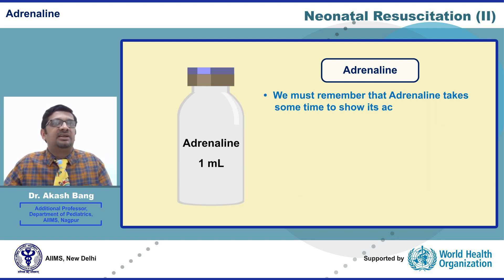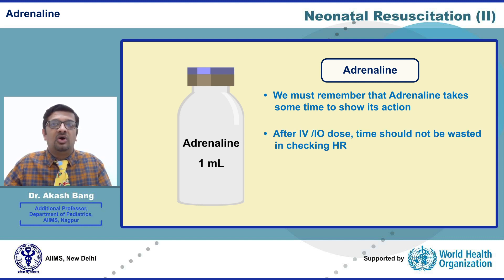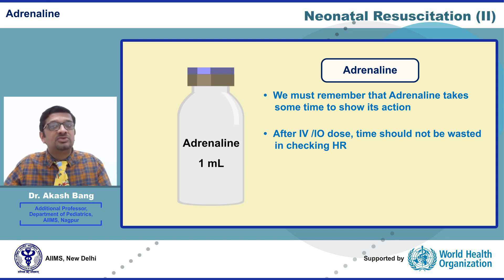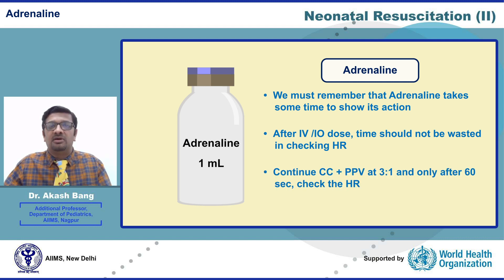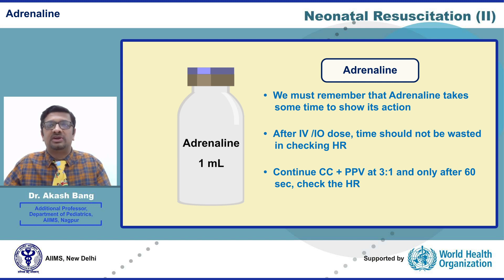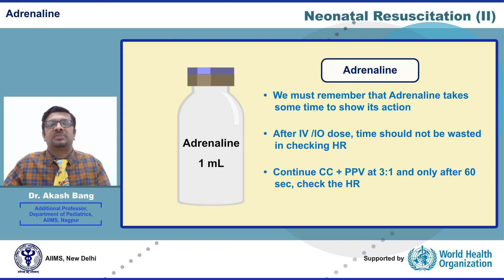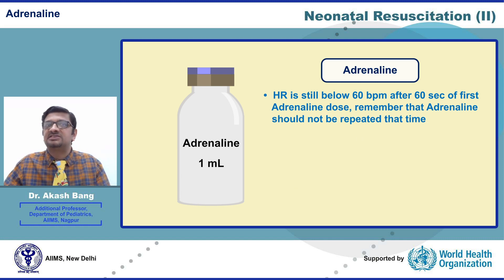Adrenaline takes some time to show its action. So after the IV or IO dose, time should not be wasted in checking the heart rate. As soon as the dose of adrenaline is given, continue chest compressions and positive pressure ventilation at a 3-to-1 ratio. Only after 60 seconds of this coordinated chest compression and ventilation should you check the heart rate. If after 60 seconds of the first dose of adrenaline the heart rate is still below 60, quickly recheck effectiveness of PPV and chest compressions.